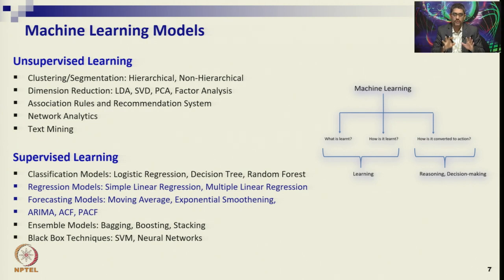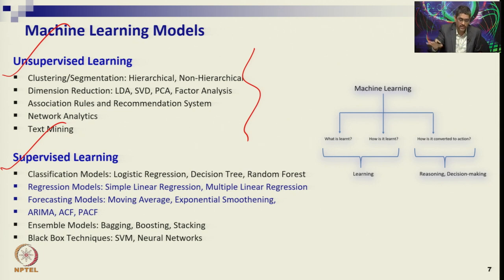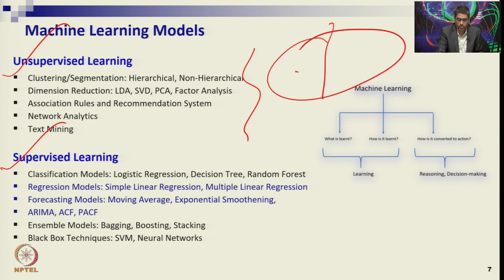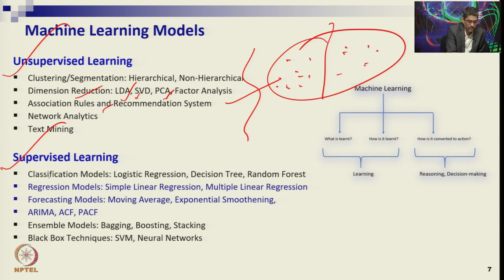Now let us come to the types of machine learning problems. There are two most popular types: unsupervised learning and supervised learning. In unsupervised learning, you do not have a dependent variable or labeled variable. All feature data are there and based on that you classify the data — who are male, who are female, who buys most. Clustering processes include factor analysis, support vector machine, linear discriminant analysis, singular value decomposition, different dimensionality reduction methods, association rules, and text mining.